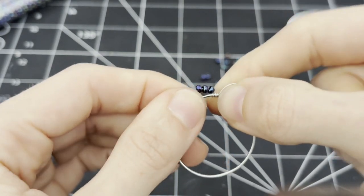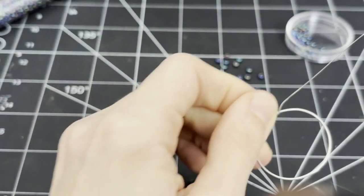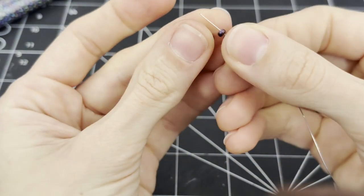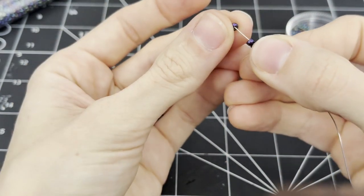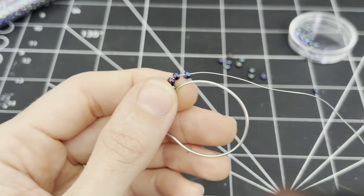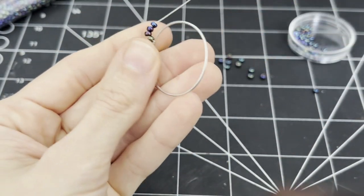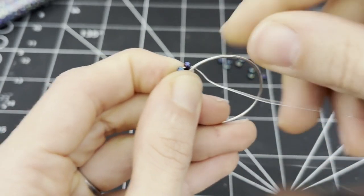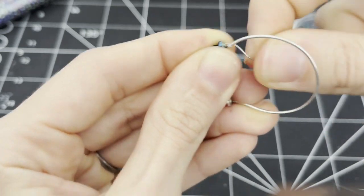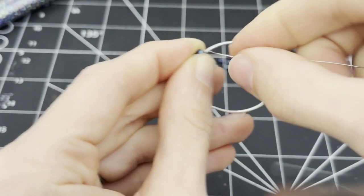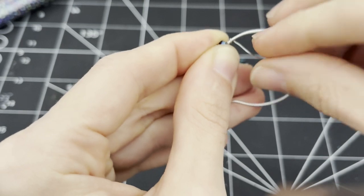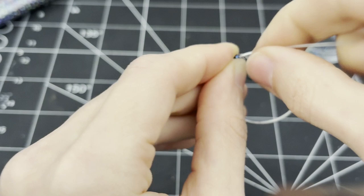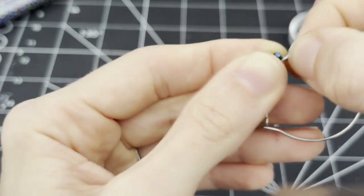So this is the first element, first kind of beaded part. And I will just continue doing that. Bring in the wire to the other side of the hoop. Wrap it a few times, four times.